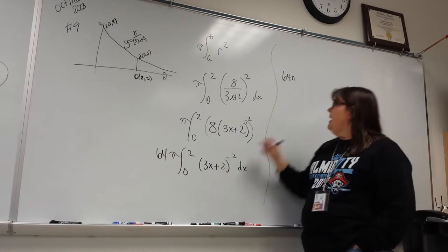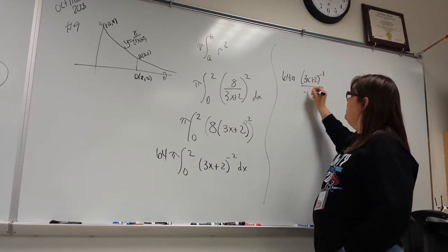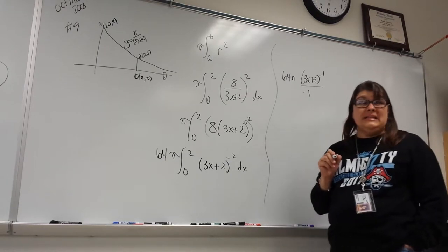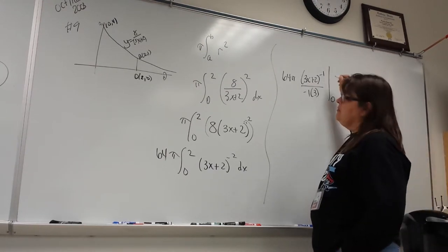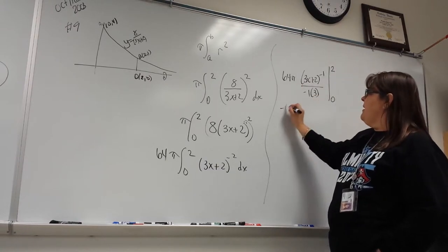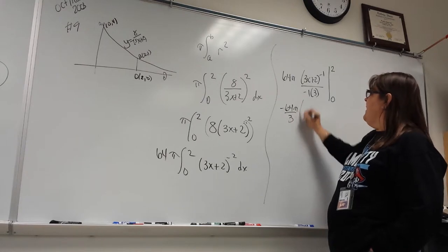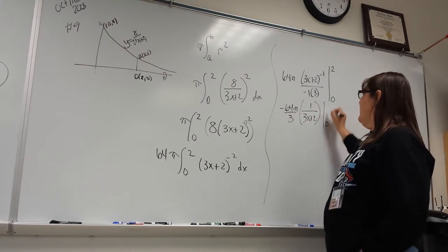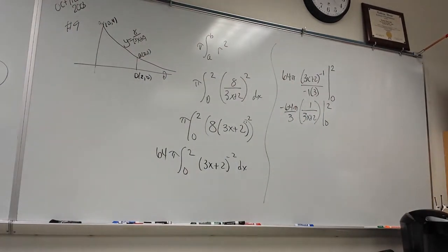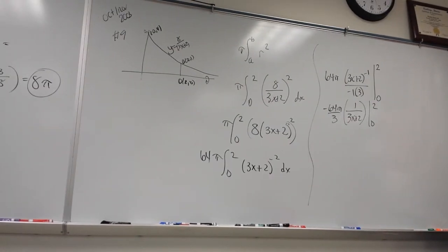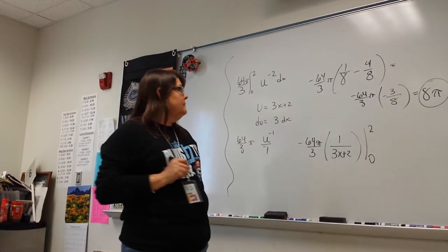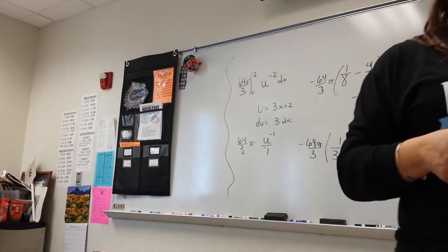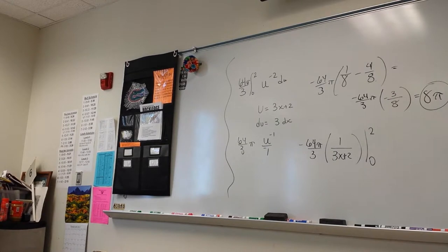So this can come out as negative 64 pi over 3, and then it's 1 over (3x plus 2), from zero to two. You plug in the two, you plug in the zero, subtract, and then multiply — same result. Let's pick another one further on, like 2010-ish, so we have a more recent one.